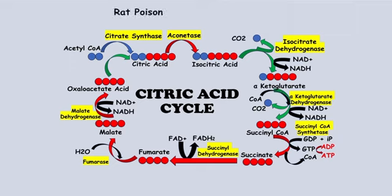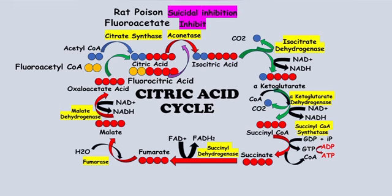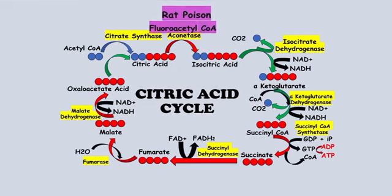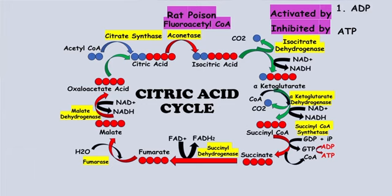Regarding aconitase: in rat poison there is a chemical called fluoroacetate. Because of it, instead of acetyl CoA, oxaloacetate combines with fluoroacetyl CoA, forming fluorocitric acid. This fluorocitric acid inhibits the enzyme aconitase. This is an example of suicidal inhibition, as it kind of acts like a suicide substrate.